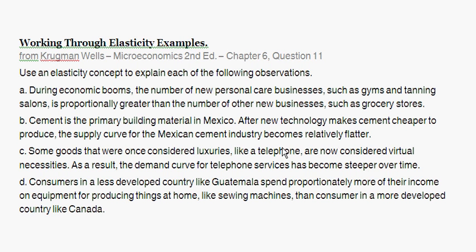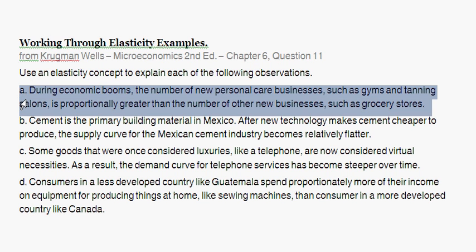With this question, we are working through elasticity examples. It's taken from Krugman-Wells, Chapter 6, The Elasticity Question, Question 11. It asks: use an elasticity concept to explain each of the following observations. Starting with A: during economic booms, the number of new personal care businesses, such as gyms and tanning salons, is proportionally greater than the number of new businesses such as grocery stores.